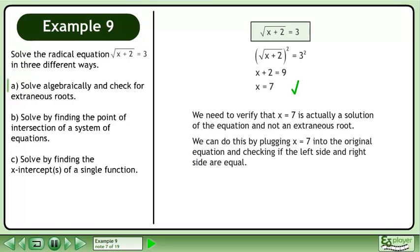We can do this by plugging x equals 7 into the original equation and checking if the left side and right side are equal. Plug 7 into the original equation. Add the numbers within the radical to get the square root of 9 equals 3.